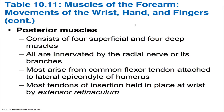Now we look at the posterior compartment muscles, which consist of four superficial and four deep muscles. They are all innervated by the radial nerve or its branches. More than half arise from a common extensor origin tendon attached to the posterior surface of the lateral epicondyle of the humerus and the adjacent fascia. The extensor tendons are held in place at the posterior aspect of the wrist by the extensor retinaculum, which prevents bowstringing when the wrist is hyperextended. The extensor muscles of the fingers end in a broad hood over the dorsal side of the digits called the extensor expansion.